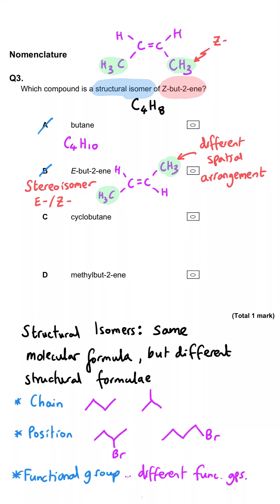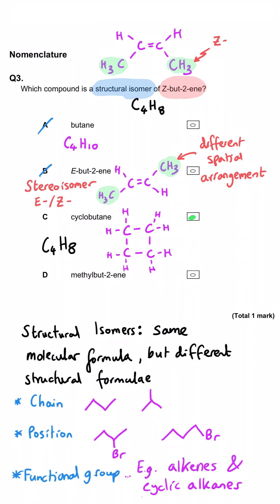Cyclobutane: 'but-' is 4 carbons again, but this time they're in a ring — hence the 'cyclo' prefix. Each of the four carbon atoms in the ring has two remaining bonds, and those go to hydrogen atoms, so it is C4H8. This is the correct answer — it is a functional group isomer. That's something to keep in mind: cyclic alkanes and alkenes are functional group isomers of each other. D is wrong because it's but-2-ene with a methyl group attached, giving it a much bigger mass and a different formula altogether.